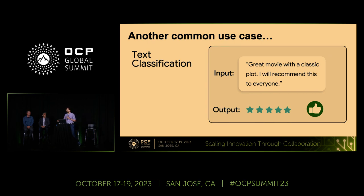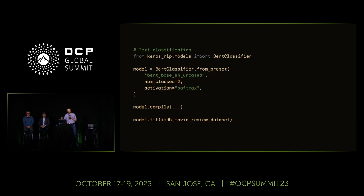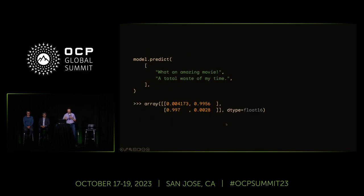Another great example is text classification. If I have movie reviews and I'm trying to infer sentiment — is this a good movie or a bad movie? — I start with a BERT classifier, specify classes for good movie and bad movie, use the IMDB movie dataset, and with those simple lines of code, I'm able to predict based on very simple statements whether the movie is good or not. 'What an amazing movie' scores 1.0, meaning really good. 'Total waste of my time' — really bad.